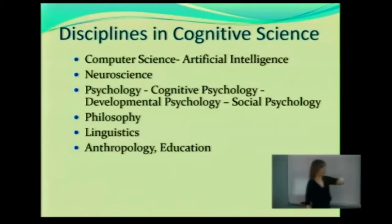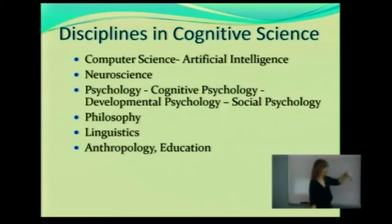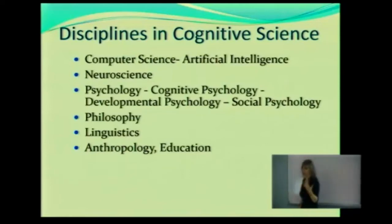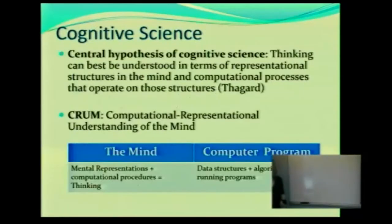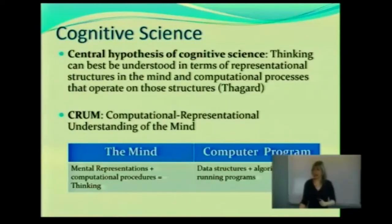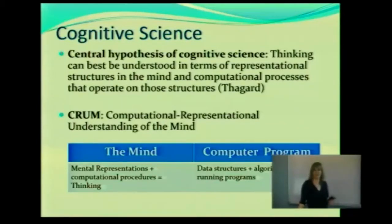There's also philosophy, linguistics — how we understand information — anthropology, education, and a lot of different areas. So I want to give you a brief background on cognitive science. I'm going to go through this part fairly quickly.